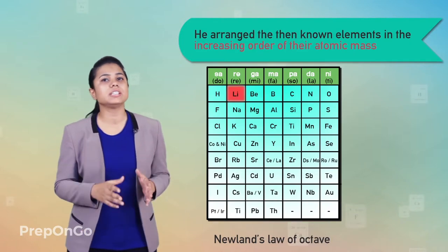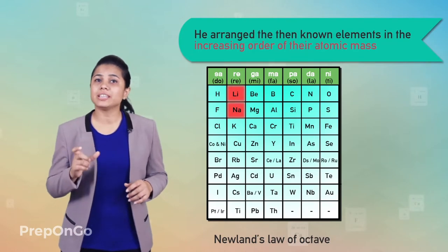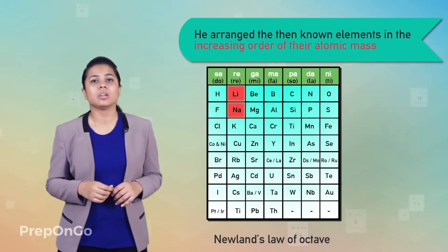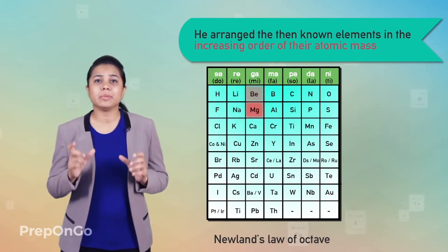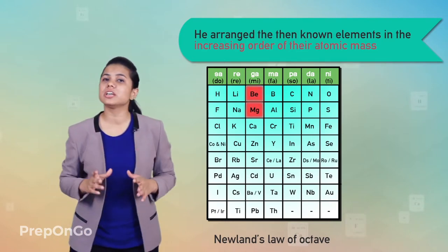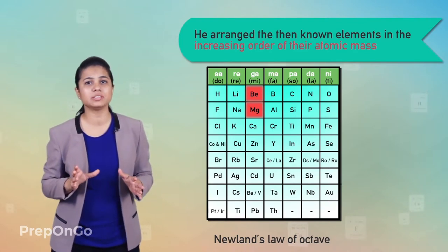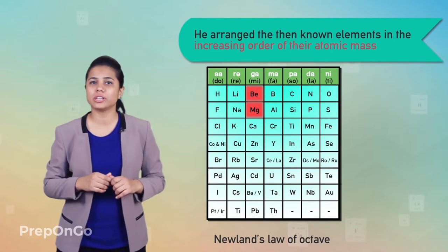In Newland's octaves, the properties of lithium and sodium were found to be the same. Sodium was the eighth element after lithium. Similarly, beryllium and magnesium were found to resemble each other. His theory showed a lot of promise as all the lighter elements seemed to fall in place following the law of octaves.